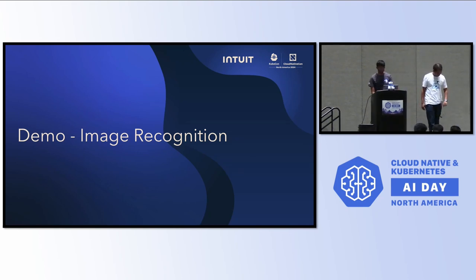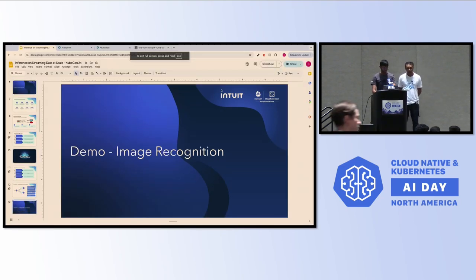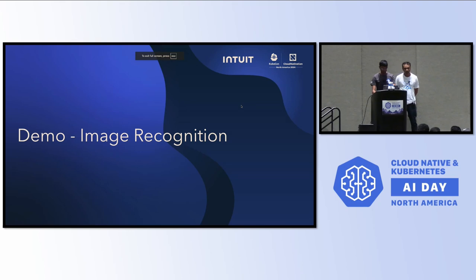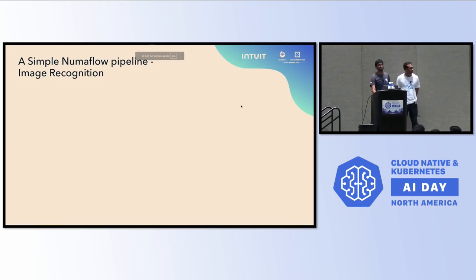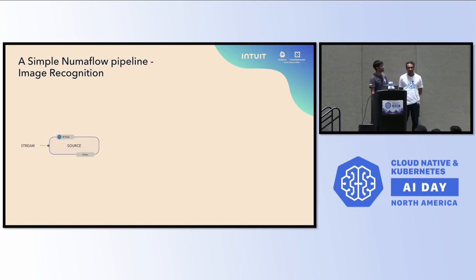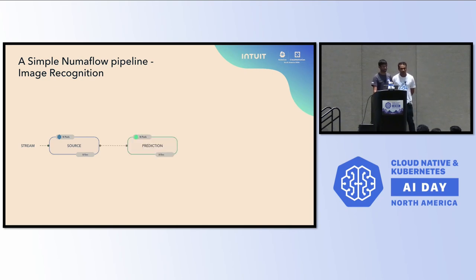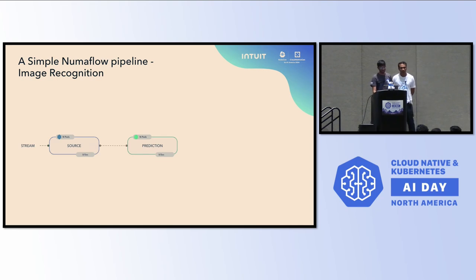Thank you, Vijit, for that introduction about Numaflow. This is going to be a completely live demo. In this example, what we are going to do is — Numaflow is primarily a stream processing platform where you can receive events from any source. There is a source or stream that you are receiving events from. The second thing is you are doing a prediction — I'm doing a simple image recognition, or rather a description of an image, as input to this pipeline. And then I'm writing these results to a sink.